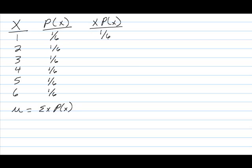So 1 times 1 sixth is 1 sixth. 2 times 1 sixth is 2 sixths, 3 sixths, and so on. So those are my x times p of x values.